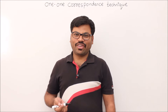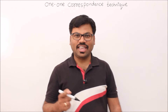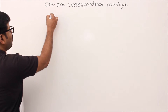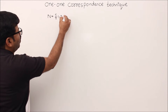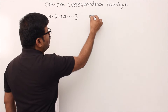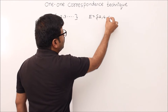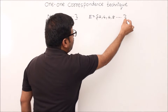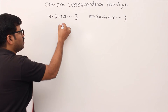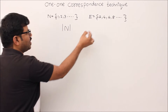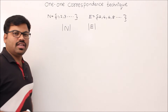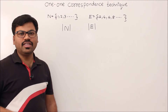Let me ask you one fundamental question about natural numbers and even numbers. Natural numbers are 1, 2, 3, and so on. Even numbers are 2, 4, 6, 8, and so on. The question is: the size of the set of natural numbers and the size of the set of even numbers — are they equal or not?